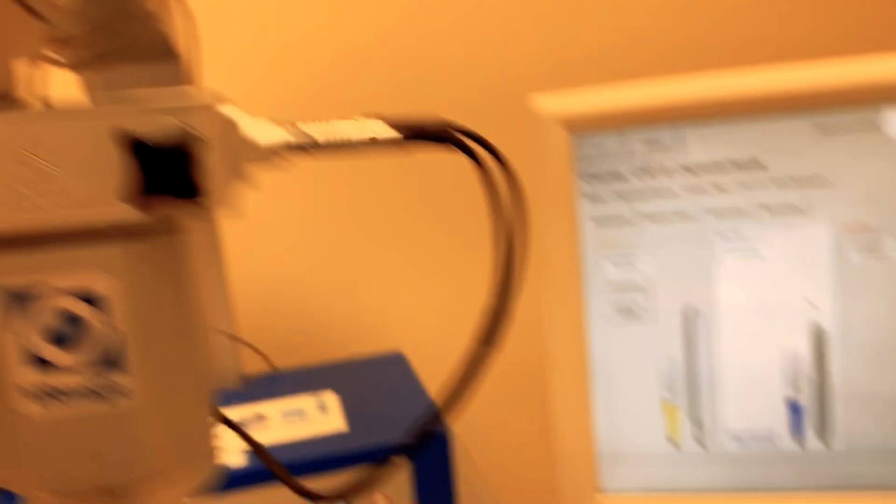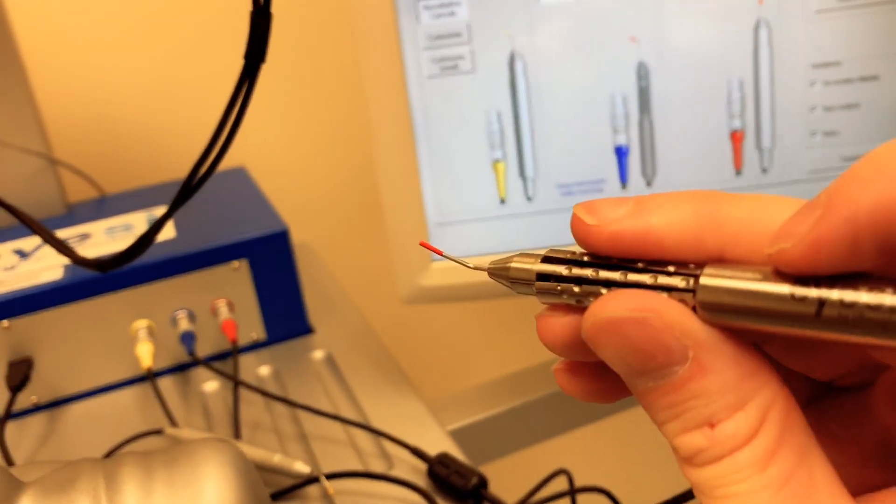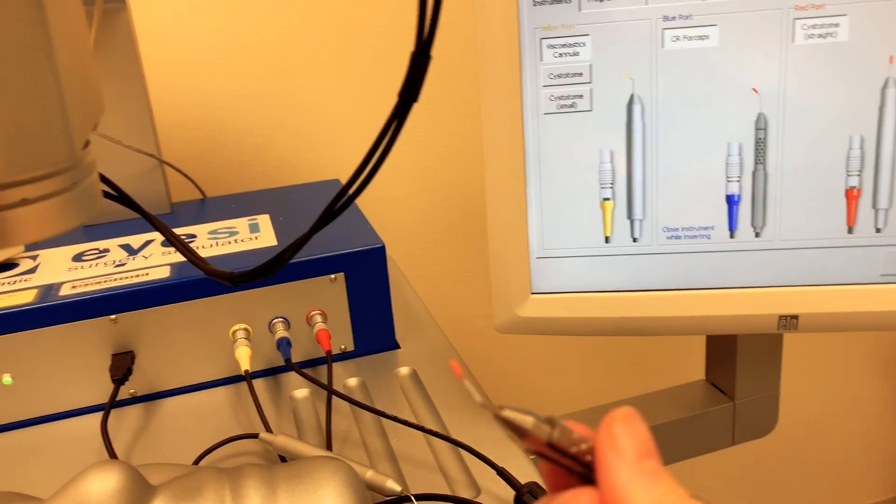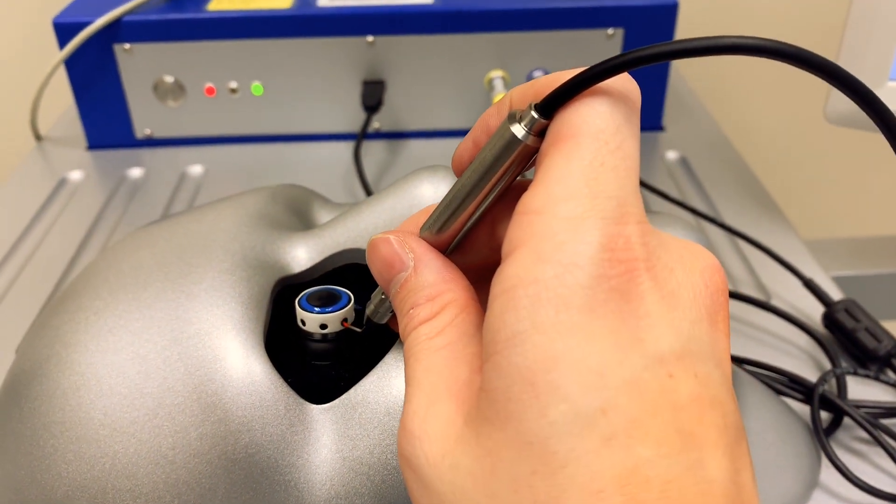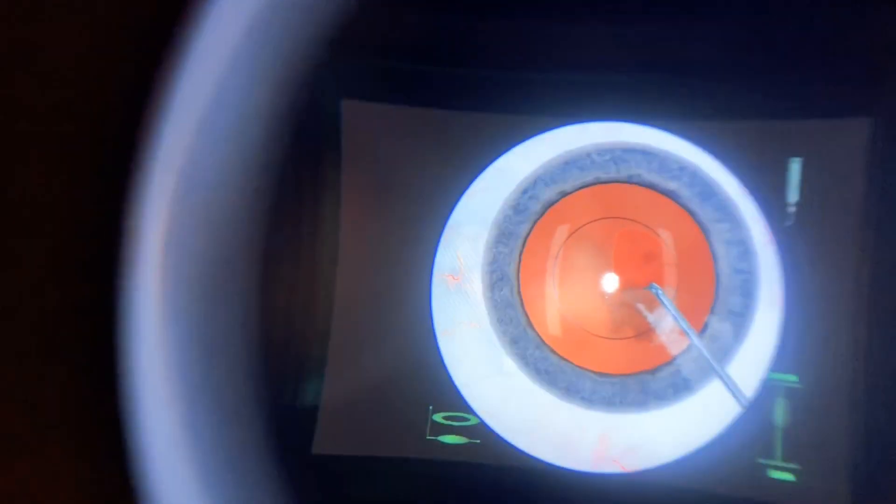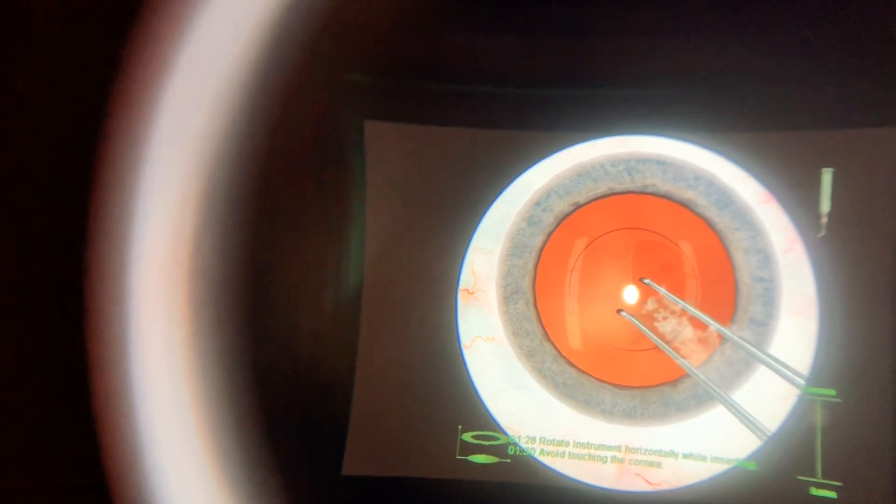So this is kind of how you train these. So that little forceps that was in there, that's what it looks like. And it just simulates once we put this into the eye. It looks like that should be there we go and you would grab and make your rhexis.